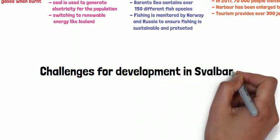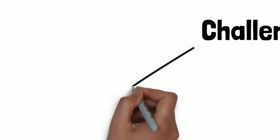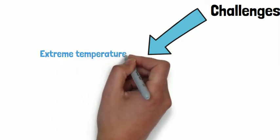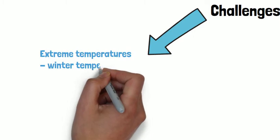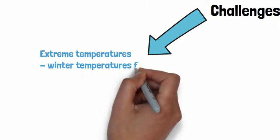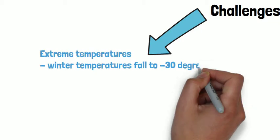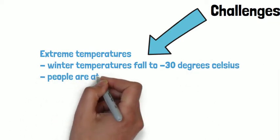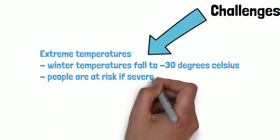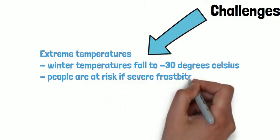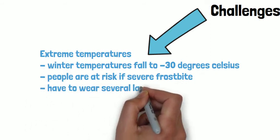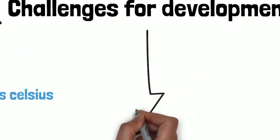With these opportunities for development, there are also going to be challenges. Our first challenge is the extreme temperatures. Winter temperatures usually fall to around minus 30 degrees Celsius, meaning people are at high risk of suffering from severe frostbite and have to wear several layers, even in the summer months.